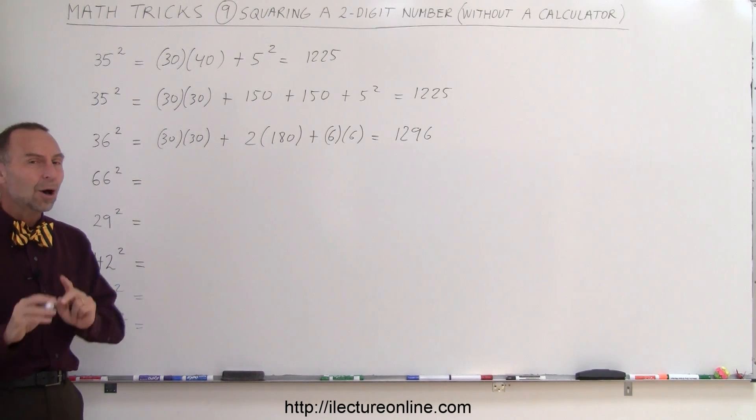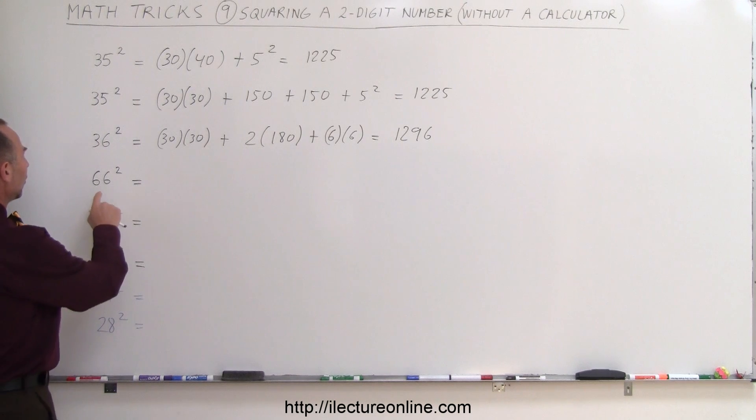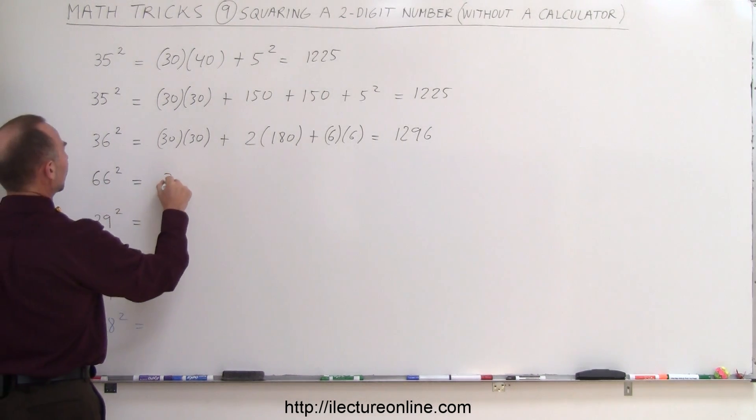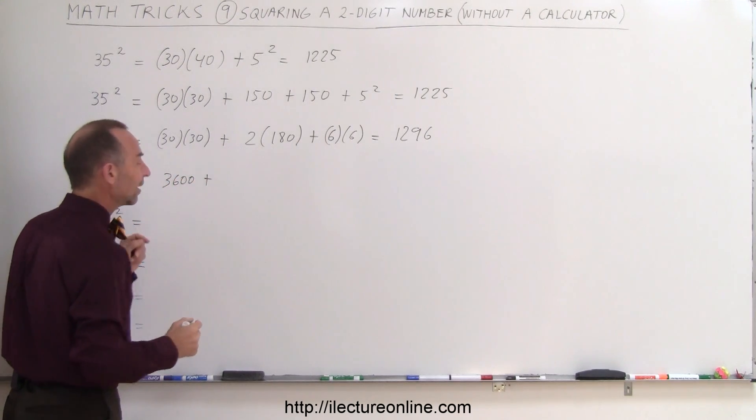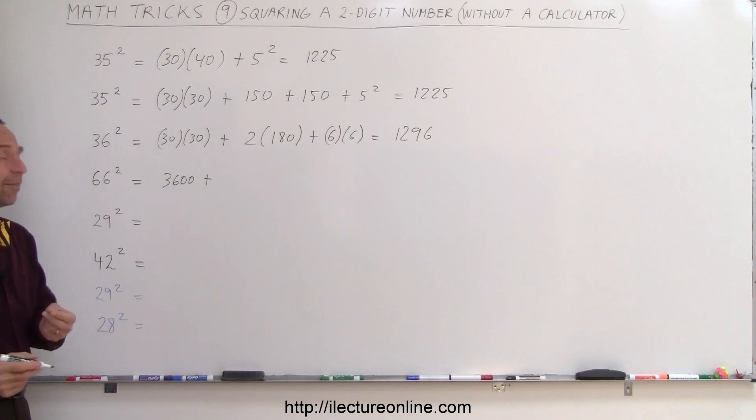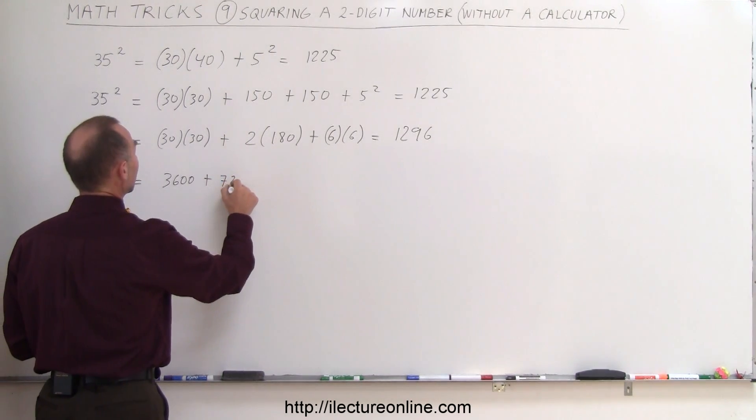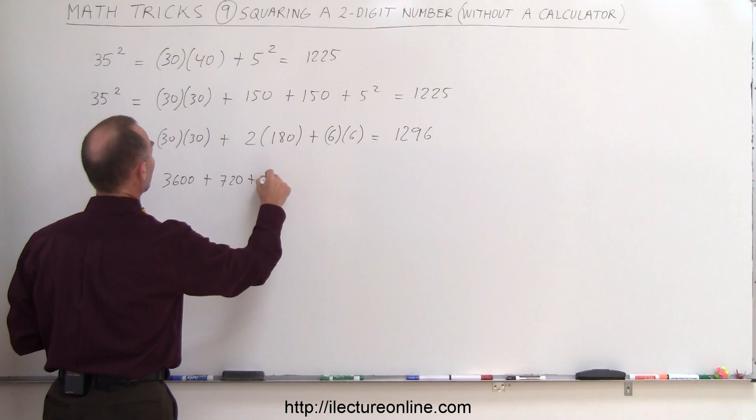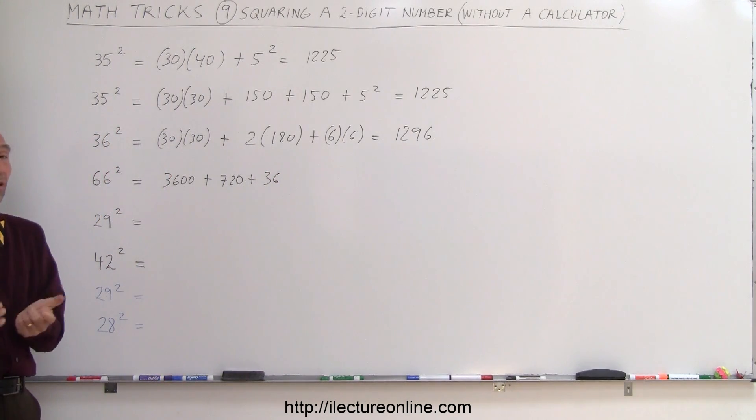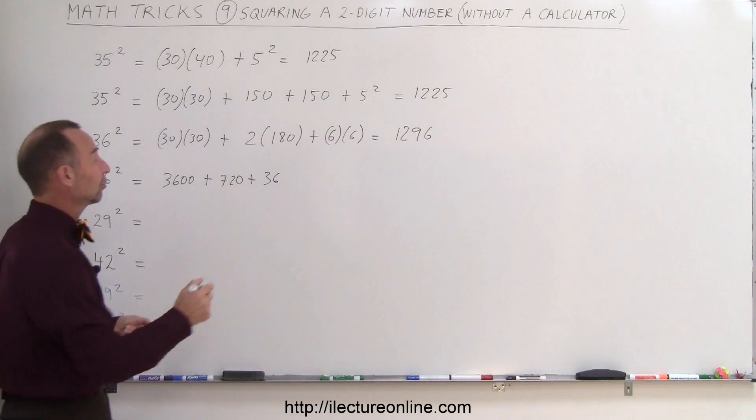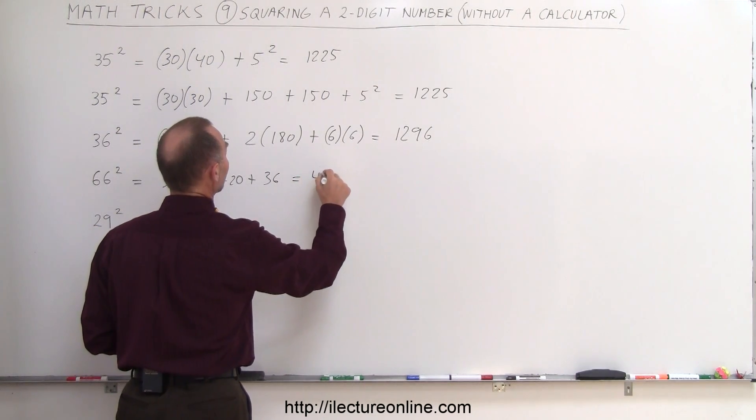All right, let's see if we can do that now without writing too many things down. So 66 squared, you go 60 times 60, which is 3600, plus 60 times 6, that would be 360, times 2, that would be 720, so plus 720, and then plus 6 squared would be 36, so you go 3600 plus 720, which is 4320, plus 36, which is 4356.